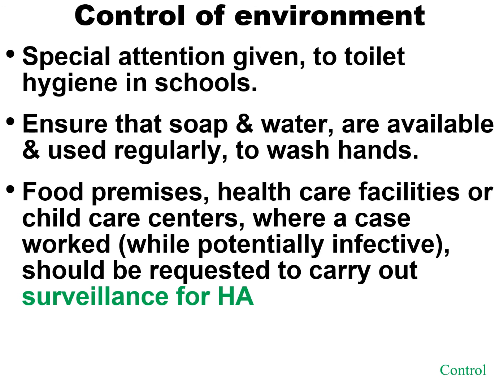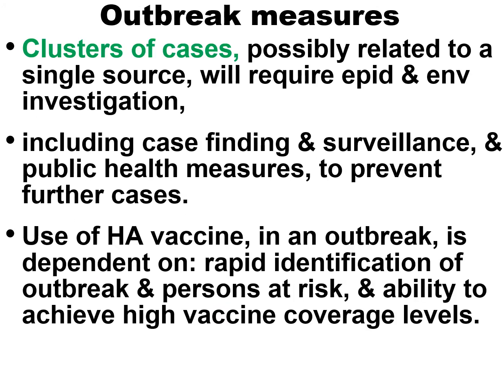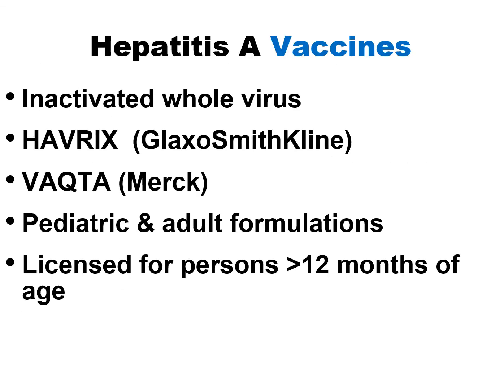Control of environment: special attention to toilet hygiene in schools; ensure that soap and water are available and used regularly to wash hands. Food premises, healthcare facilities, or child care centers where a case worked while potentially infective should be requested to carry out surveillance for hepatitis. Outbreak measures: a cluster of cases possibly related to a single source will require epidemiological and environmental investigation including case finding. Use of Hepatitis A vaccine in an outbreak is dependent on rapid identification of the outbreak, persons at risk, and ability to achieve high vaccine coverage.